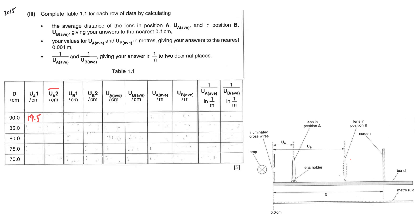ua₂ means repeating the experiment again with the distance still at 90, so you'll most likely get the same answer or just slightly different — it cannot be too far off. From the instructions, continue moving the screen to the right until there is another sharp image formed; that lens distance is ub. Record ub₁ and ub₂ because you repeat the experiment. The instrument is a ruler (0.1 cm precision), so all readings must be to one decimal place — if it's 70 exactly, write 70.0.